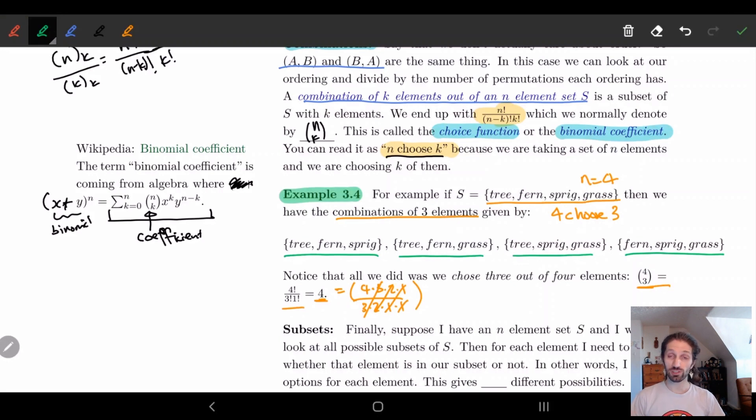We end up having the 4 different ways I can choose 3 elements out of 4. So I have tree, fern, sprig. Tree, fern, grass. Tree, sprig, grass. And fern, sprig, grass. So I have the 4 different options. And that's it. So this is how we get combinations.